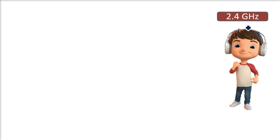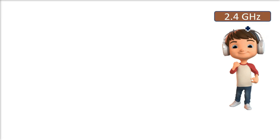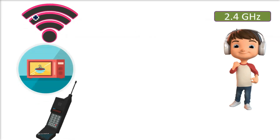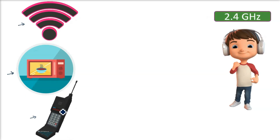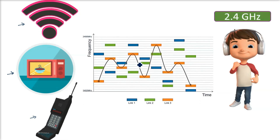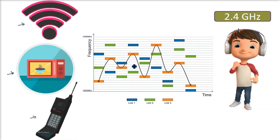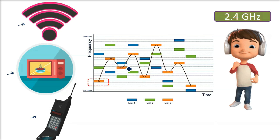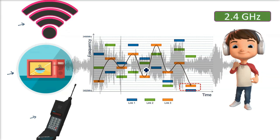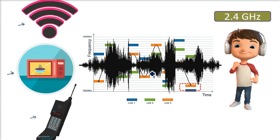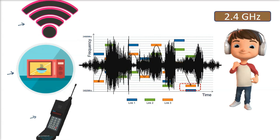Bluetooth जिस band में operate करता है, उसे बहुत सारे devices share करते हैं — जैसे कि Wi-Fi router, microwave, और cordless phones। अगर आप frequency hopping का इस्तेमाल नहीं करते, तो Bluetooth signals आसानी से बाधित हो सकते हैं दूसरे devices के द्वारा। नतीजा यह होगा कि connection खराब होगा, quality खराब होगी, और पूरा communication नाकामयाब हो जाएगा।